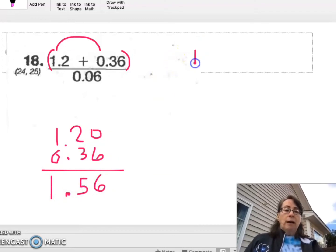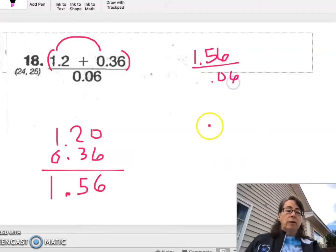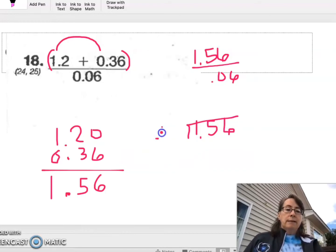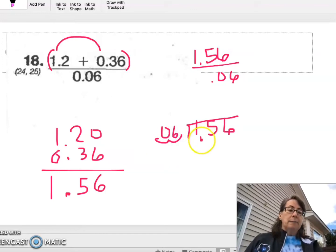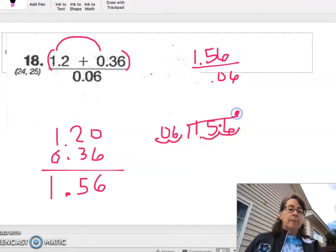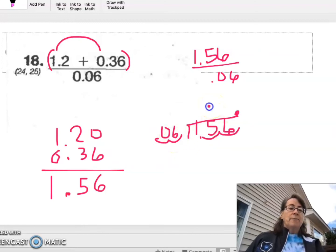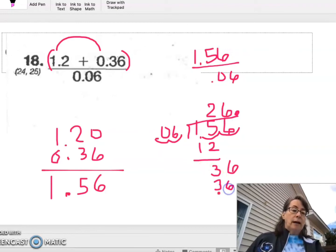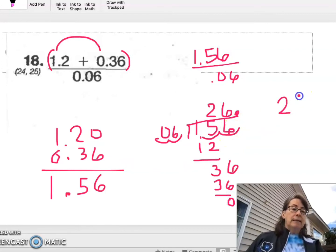1.56 divided by 0.06. When my divisor has decimals, I must clear those decimals. So now I'm doing 6 into 156, and my new decimal will be right here at the end. 6 goes into 15 two times. 2 times 6 is 12. 15 minus 12 is 3. Bring down my 6. 6 goes into 36 six times. 26 is my final answer.